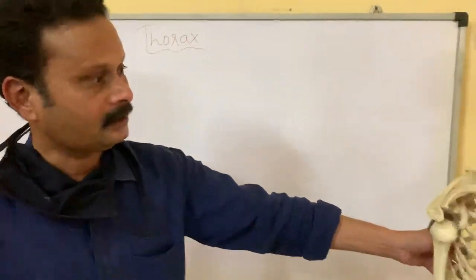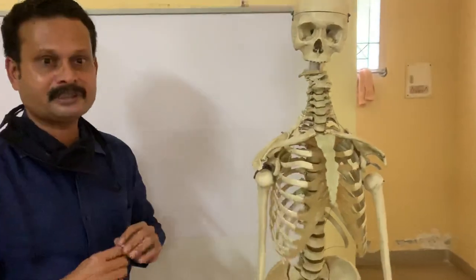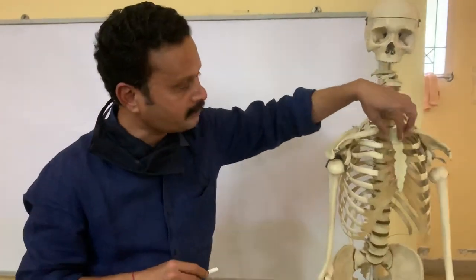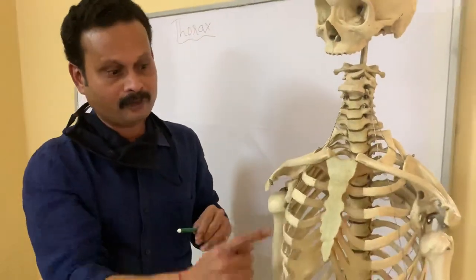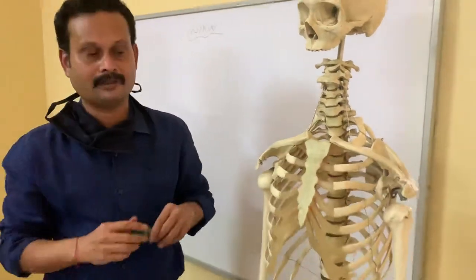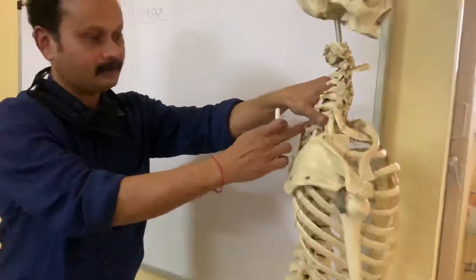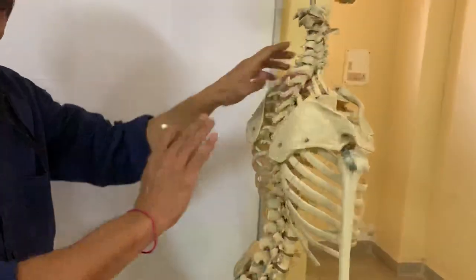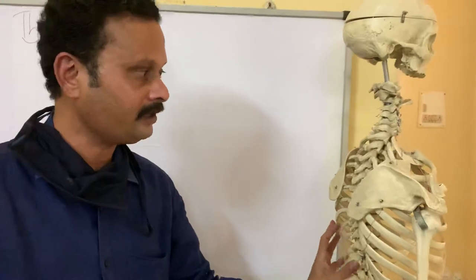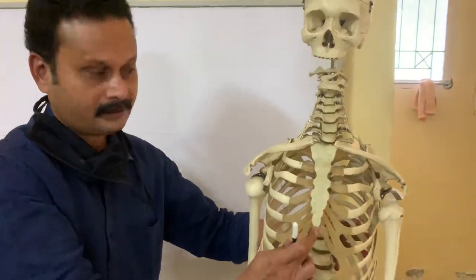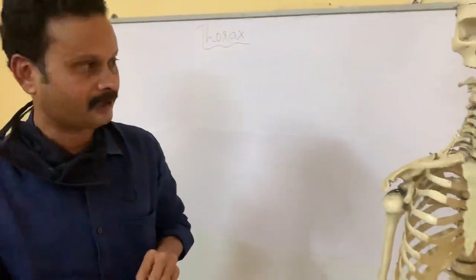The thorax is limited by the thoracic cage, which is made up of a single bone anteriorly in the midline which is the sternum, and 12 pairs of ribs on either side, and posteriorly the 12 thoracic vertebrae. So the thoracic cage is made up of 12 thoracic vertebrae from behind, a sternum in front, and 12 pairs of ribs — all these together constitute the thoracic cage.